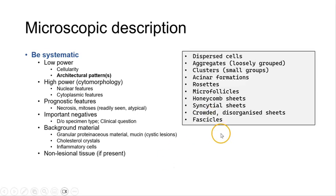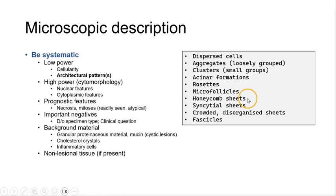In terms of architectural patterns, here is a list of some terms that can be used — this is not an exhaustive list. We have dispersed cells, aggregates or loosely grouped cells, clusters (cells which are more cohesive and arranged in small groups), acinar formations, rosettes, micro follicles, honeycomb sheets, flat sheets, syncytial sheets, crowded disorganized sheets, and fascicles.